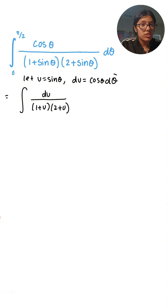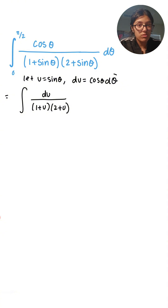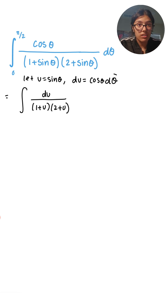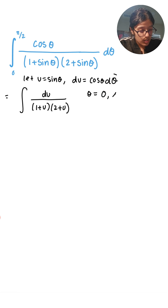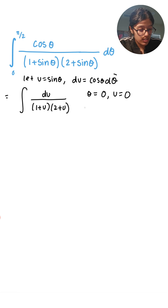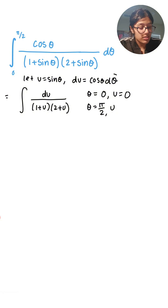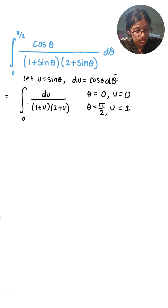We do need to change our bounds since we have everything in terms of u. These bounds are first in terms of θ — when θ equals 0, u equals sin(0) which is 0. When θ equals π/2, u equals sin(π/2) which is just 1. So our new bounds are going to be 0 to 1.